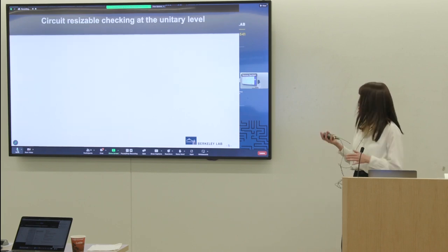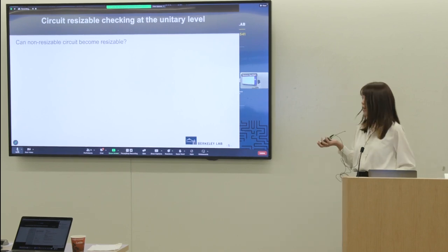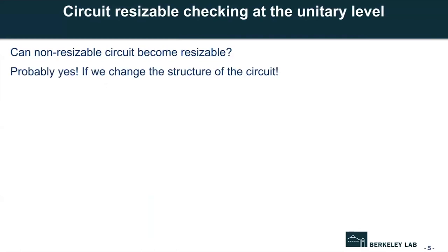But for some circuits, we cannot find any resizable pairs. Can we still resize this type of circuits? The answer is probably yes, only if we change the structure of the circuit. Here's an example. We have a four qubit circuit. For quantum circuits, each gate is like a matrix and applying multiple qubits is like doing matrix multiplication. So the overall performance of the circuit is like a unitary matrix. We can arbitrarily modify the structure of the circuit or the gate type or whatever, as long as we maintain the same matrix.